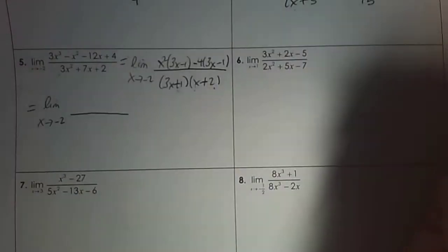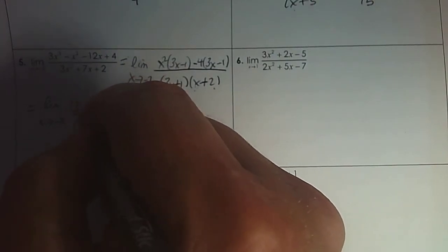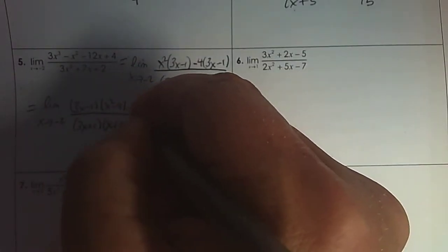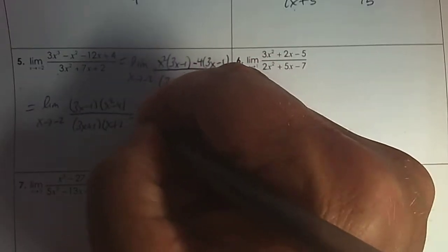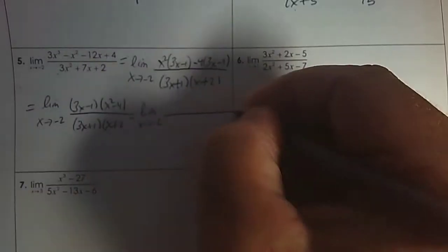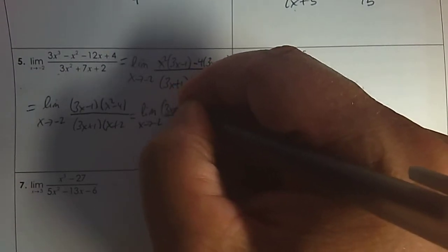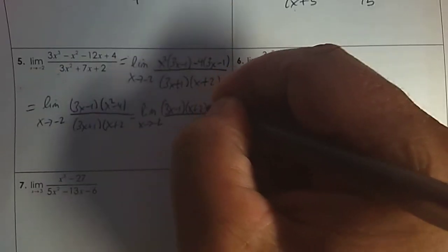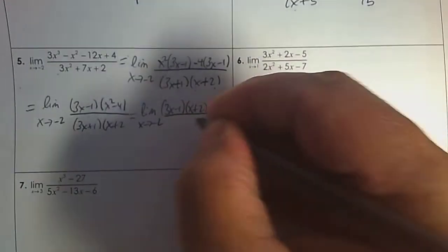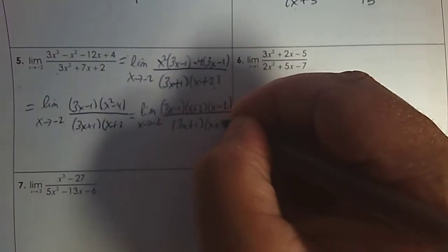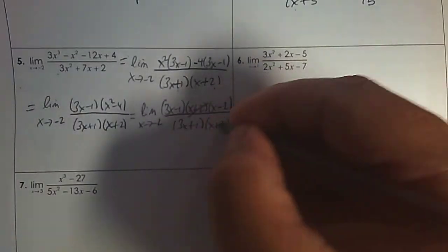So the limit as x approaches negative 2: we do have a 3x minus 1, and then x squared subtract 4. Well, x squared subtract 4 can be factored further. So again, write down the limit. We have 3x minus 1, and then x plus 2 times x subtract 2 in the numerator. In the denominator, 3x plus 1 and x plus 2 — so 3x plus 1 is not the same factor, and x plus 2 is the hole.